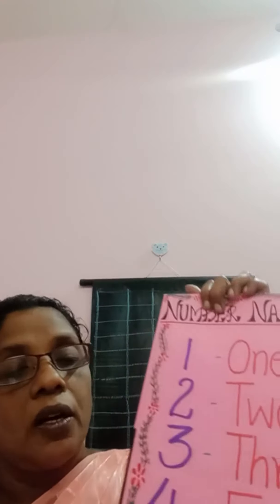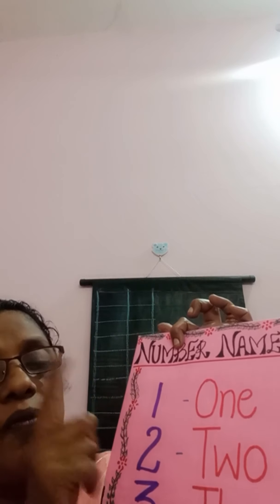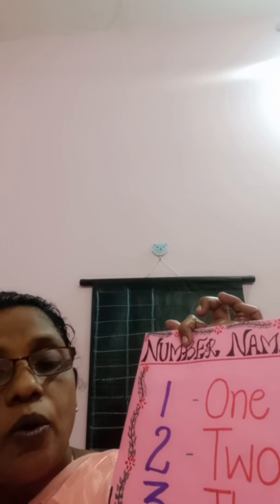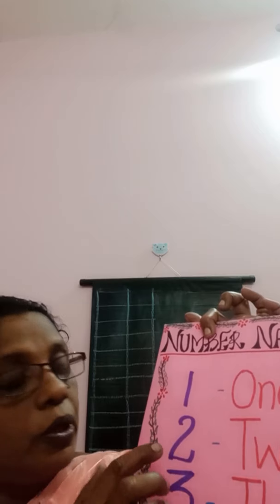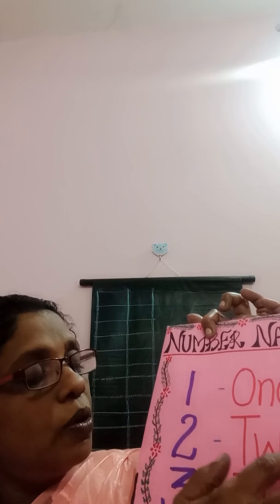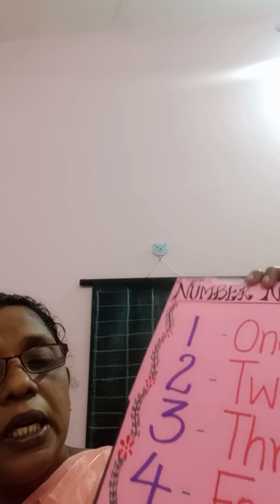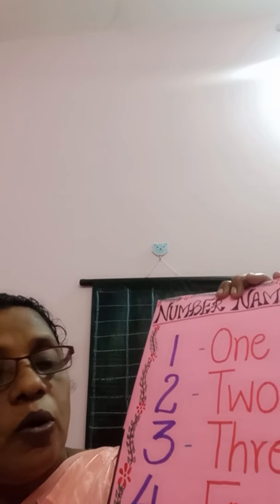Alright, now we can learn number names 1 to 5. O-N-E, 1. Spelling of 1: O-N-E. T-W-O, 2. Spelling of 2: T-W-O.